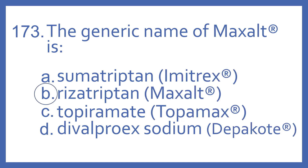And the answer is B. Rizatriptan is the generic name for Maxalt. Sumatriptan is the generic name for Imitrex, and both of those medications are serotonin agonists used for migraine headaches.